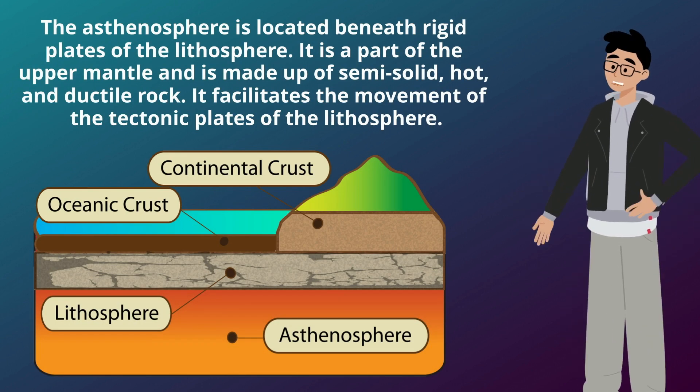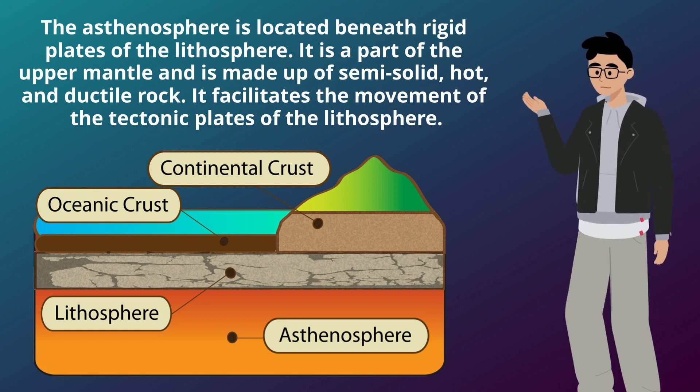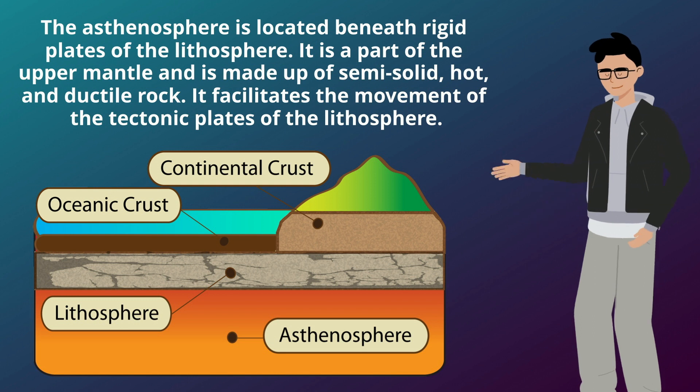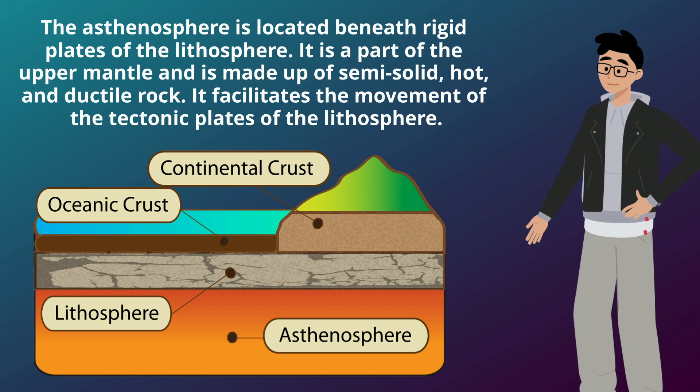The asthenosphere is located beneath the rigid plates of the lithosphere. It is a part of the upper mantle and is made up of semi-solid, hot, and ductile rock. It facilitates the movement of the tectonic plates of the lithosphere.